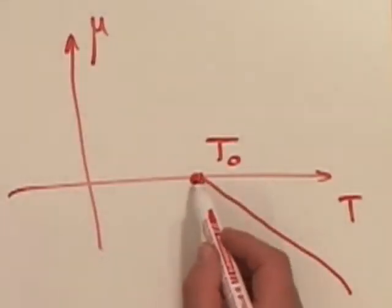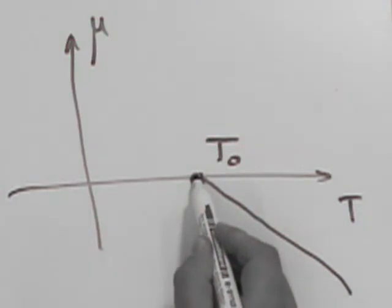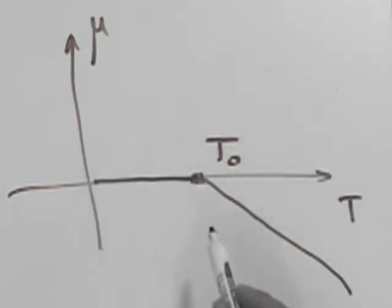So, now, number of particles become a variable, not fixed value. If you decrease temperature below T₀, the chemical potential remains zero. And more and more particles, from excited states, they condense in ground state.